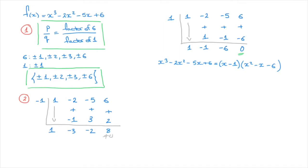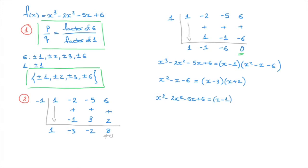All we're left to do now is solve this quadratic. We need to solve x squared minus x minus 6, which we can do by factoring. Factoring this quadratic, we find it equals x minus 3 times x plus 2. Combining this with our earlier result, we can rewrite the original polynomial as x minus 1 times x minus 3 times x plus 2. This is known as root factoring the polynomial.